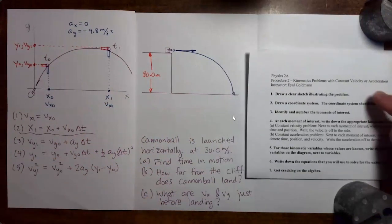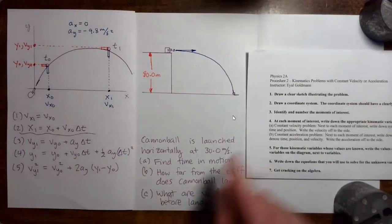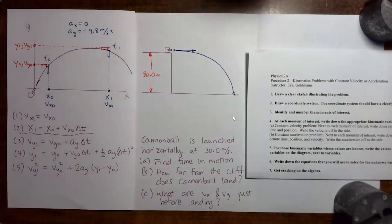Okay, so the first step is to draw a clear sketch illustrating the problem. There we go. Step two, draw a coordinate system. So in this example, our coordinate system is going to have x and y axes.